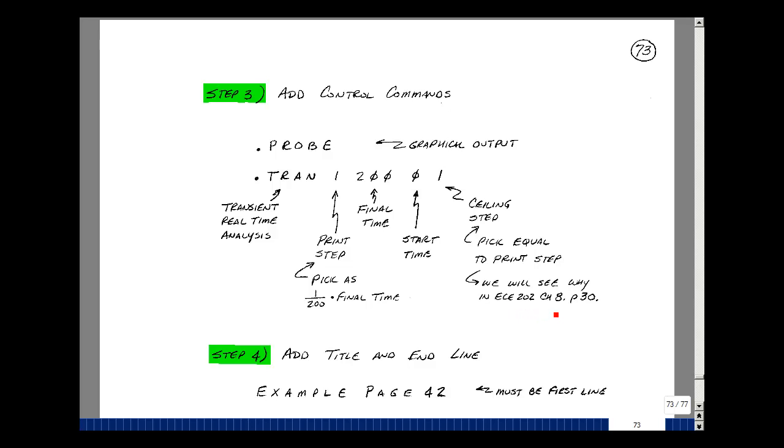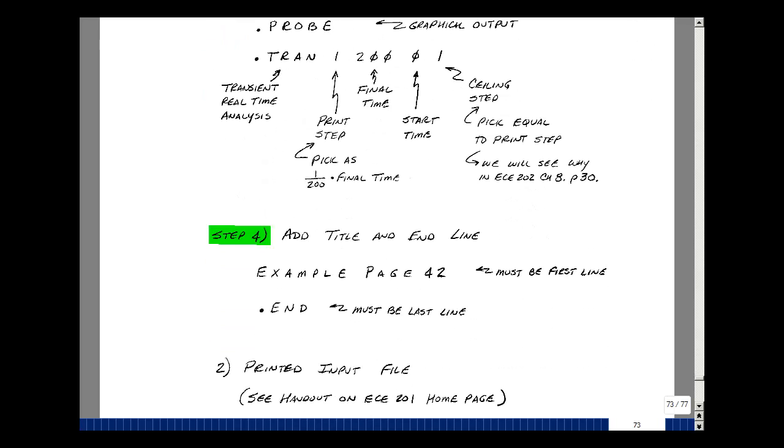I'm going to start plotting my results at time t equals 0, and the fourth number is the ceiling step. For right now, pick the ceiling step to equal the print step. The PSPICE program has to have a title line and a .end line. If you skip the title, it'll take the first line and consider that the title. In this case, we're doing example on page 42. The last statement needs to be .end to indicate that our file is at the end.